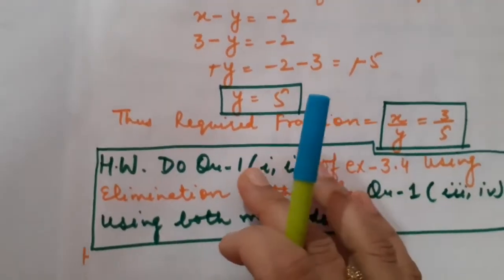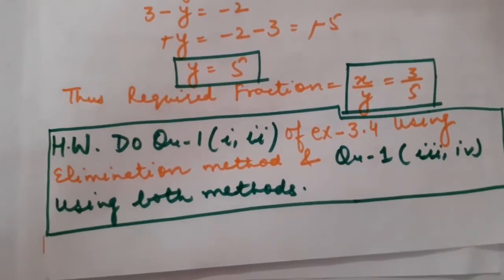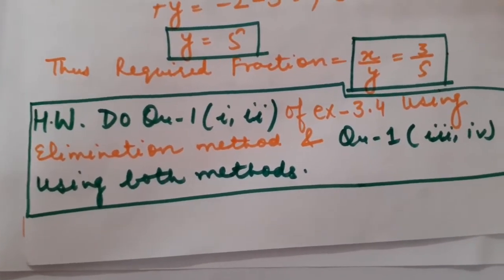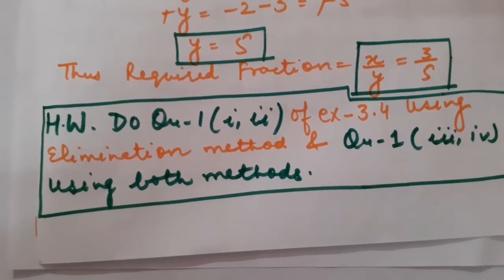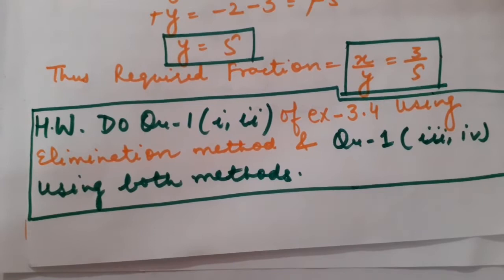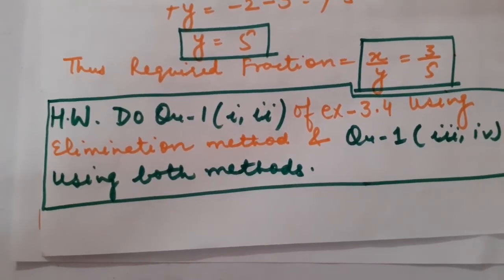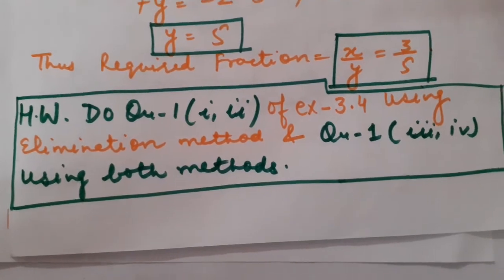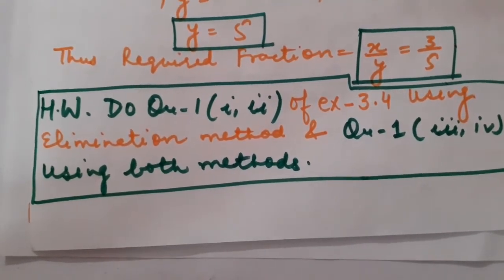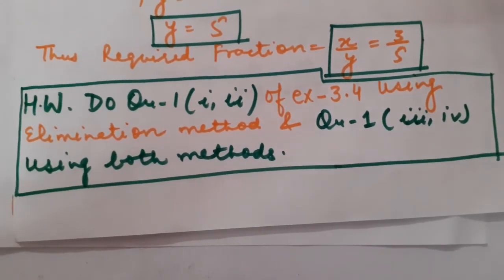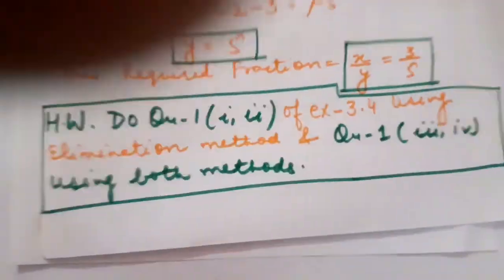Now everybody please get your maths homework. Today we have covered the Elimination Method — both direct questions and one word problem. Your maths homework is to do question number 1, first part and second part of Exercise 3.4 using Elimination Method only. Also, question number 1, third and fourth parts should be done using both Elimination and Substitution methods.